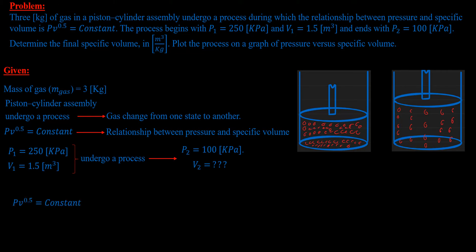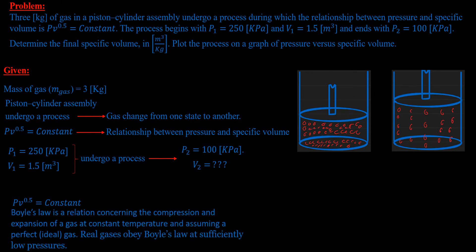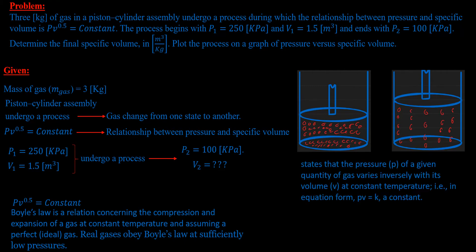This relationship PV equals constant represents Boyle's law. Boyle's law is a relation concerning the compression and expansion of a gas at constant temperature, assuming a perfect ideal gas. Boyle's law states that the pressure P of a given quantity of gas varies inversely with its volume V at constant temperature. This means that at constant temperature, as pressure increases, volume decreases.